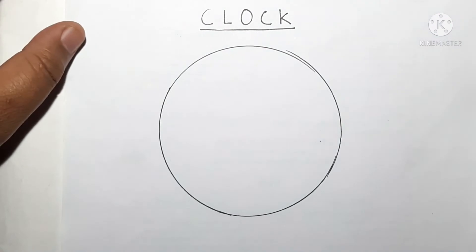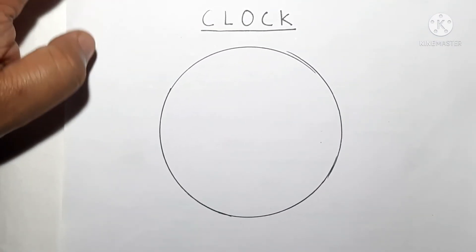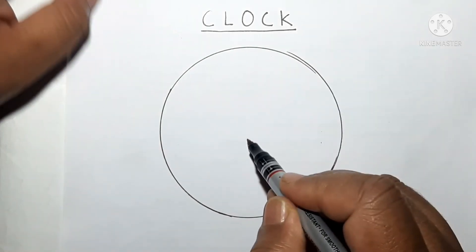Now let us write the numbers. As you know, there are 12 numbers, so first point out the center.